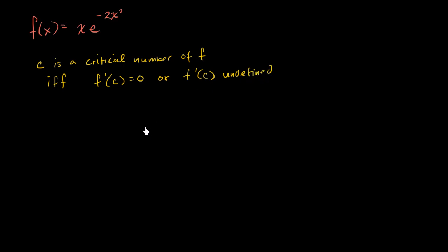So if we look for the critical numbers for f, we want to figure out all the places where the derivative with respect to x is either equal to zero or it is undefined. Let's think about how we can find the derivative of this. We're going to have to apply some combination of the product rule and the chain rule.